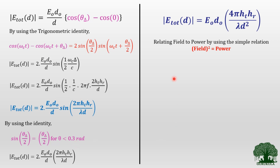By making the small-angle approximation sin(θ) ≈ θ, the final E_total equation takes the form: E_total = E₀D₀ · (4π·h_T·h_R) / (λ·D²). This is the simplified final E field expression received at the receiver side after all assumptions and approximations. We have so far represented the result only in terms of E field.